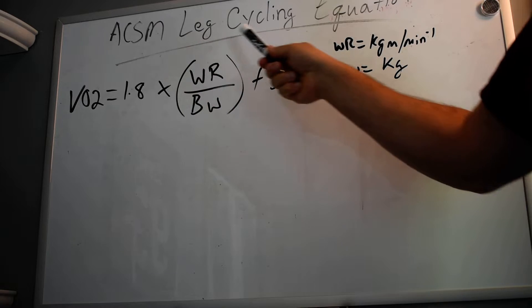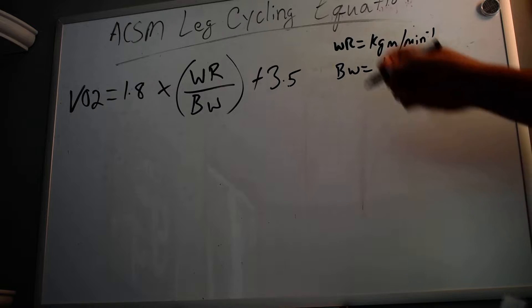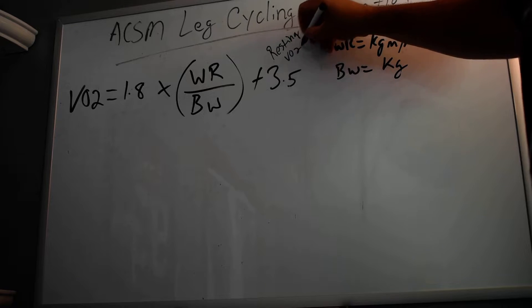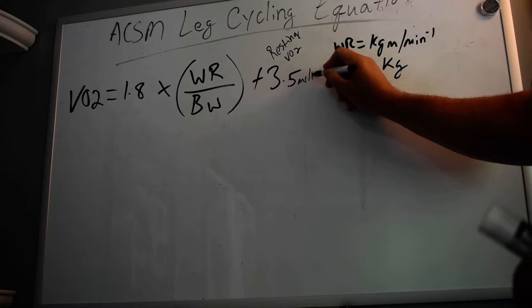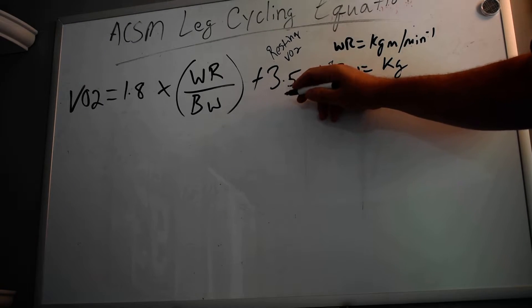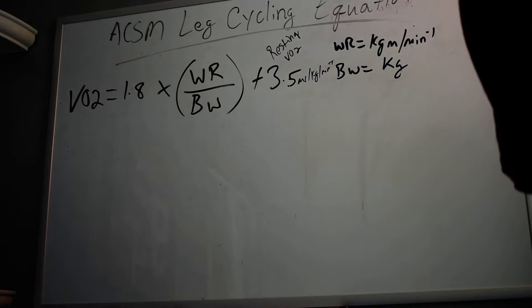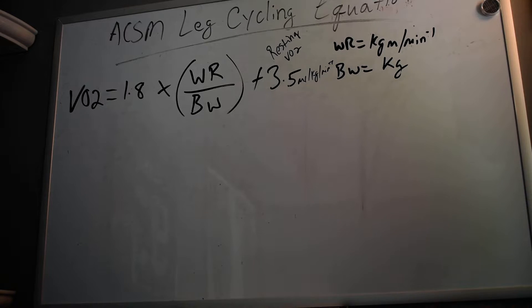Then add the 3.5. Remember, the 3.5 represents resting VO2, which we always measure at 3.5 milliliters per kilogram per minute of oxygen. That's always going to be a constant — if you see 3.5, you know it's representative of resting VO2 consumption. Before you can do the equation, you need to know the work rate and the body weight.